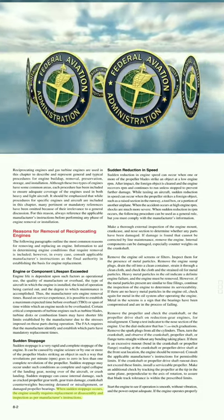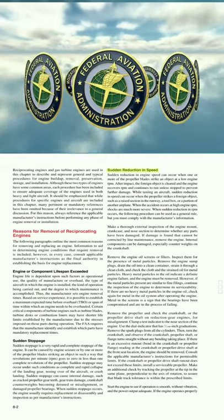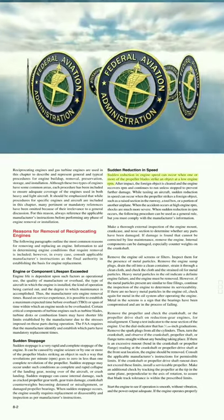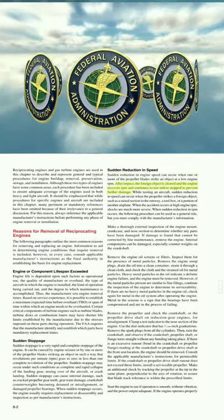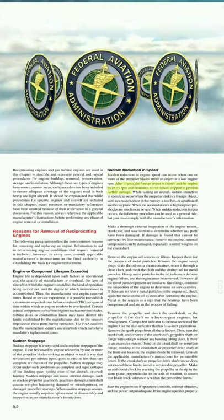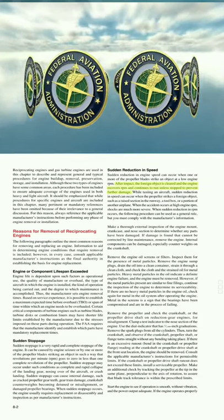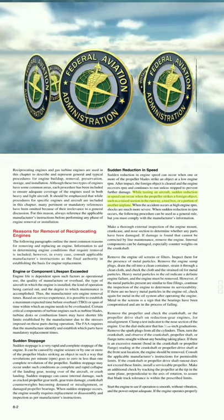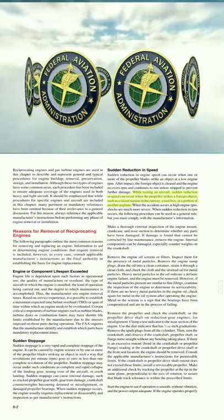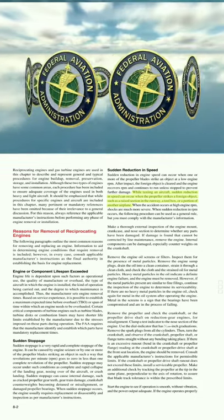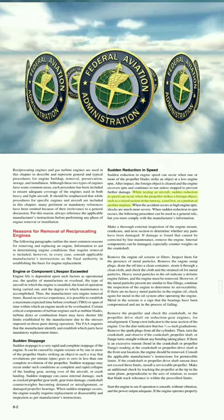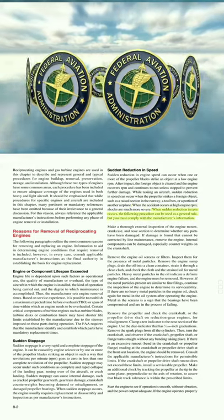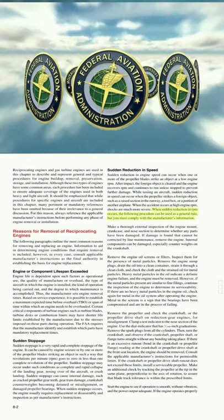When sudden stoppage occurs, the engine usually requires replacement or disassembly and inspection per manufacturer's instructions. Sudden reduction in speed can occur when one or more propeller blades strike an object at low engine RPM. After impact, the foreign object is cleared and the engine recovers RPM and continues to run unless stopped. This can happen while taxiing when the propeller strikes a foreign object such as a raised section in the runway, a toolbox, or a portion of another airplane. When the accident occurs at high engine RPM, shocks are much more severe.